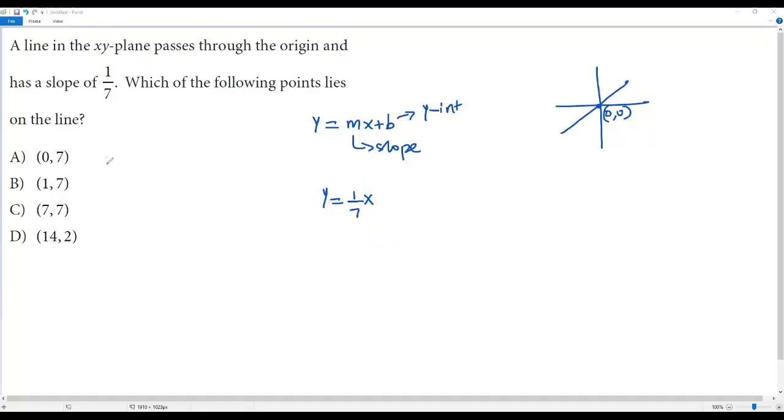Now we have to find which point lies on this line. For that, we have to check each option.